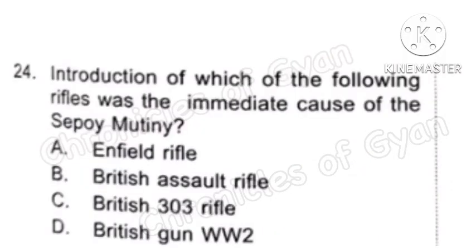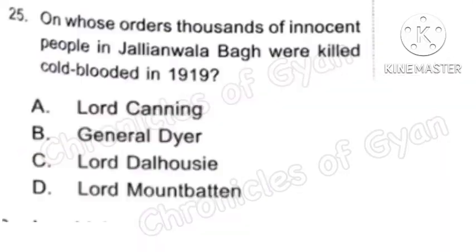Question 24: Introduction of which of the following rifles was the immediate cause of the Sepoy Mutiny? The correct answer is Option A, Enfield Rifle.